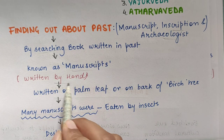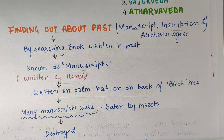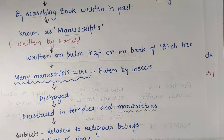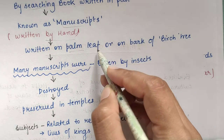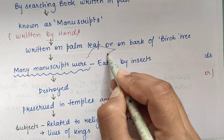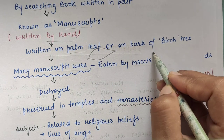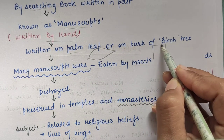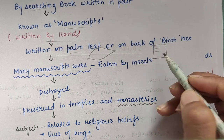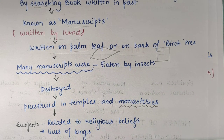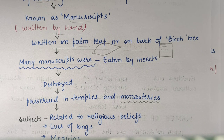Manuscripts were written on palm leaf or on the bark of a birch tree — ya toh ye palm leaf pe likhi jaati thi, ya bark pe. Bark means the stem of a tree — tree ka bark hota tha, us pe likhi jaati thi. But there was a problem with manuscripts — manuscripts were usually eaten by insects and were destroyed also.